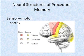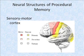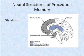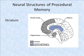Procedural memory can be localized to four major structures within the brain. The first is the sensory motor cortex, which can be seen in the primary, secondary, and tertiary areas of both the sensory and motor areas in the brain. Procedural memory also involves the striatum, which can be seen in the medial view of the brain.